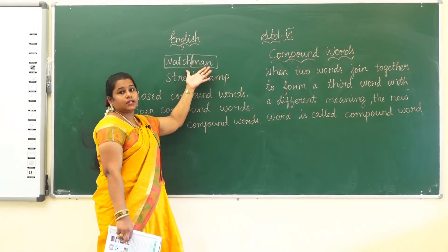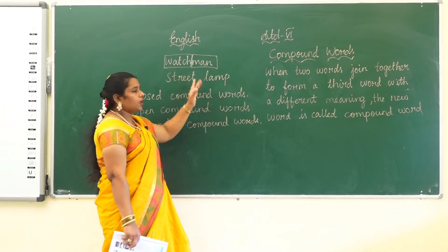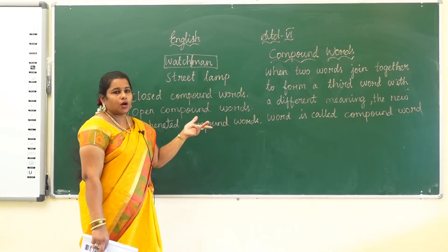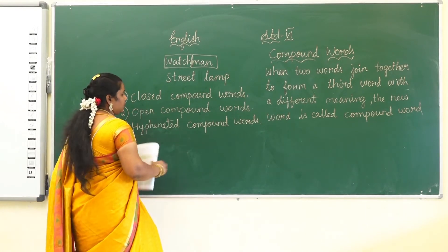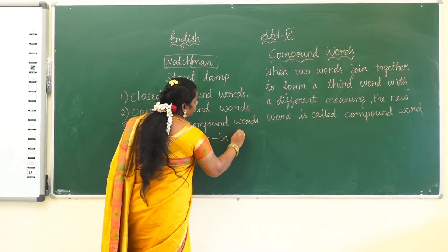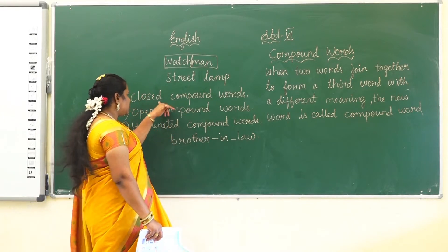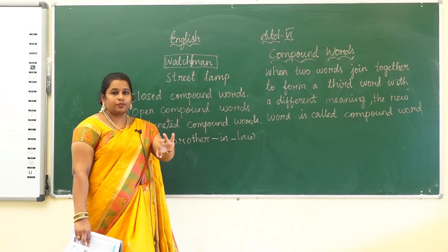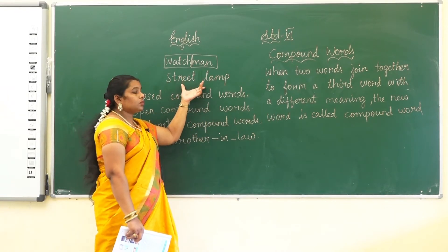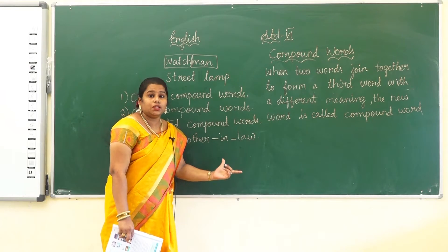Closed means we never leave space between the two words — it is closed. Open compound words means we have to leave some space between the two words. And hyphenated compound words means we put a hyphen in between the words. For example, brother-in-law: brother, then hyphen, then in, then hyphen, then law. This is a hyphenated compound word.